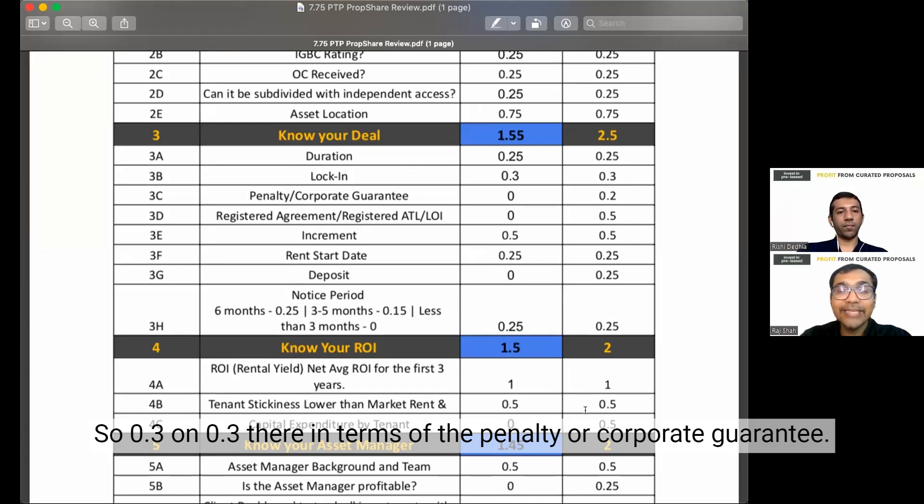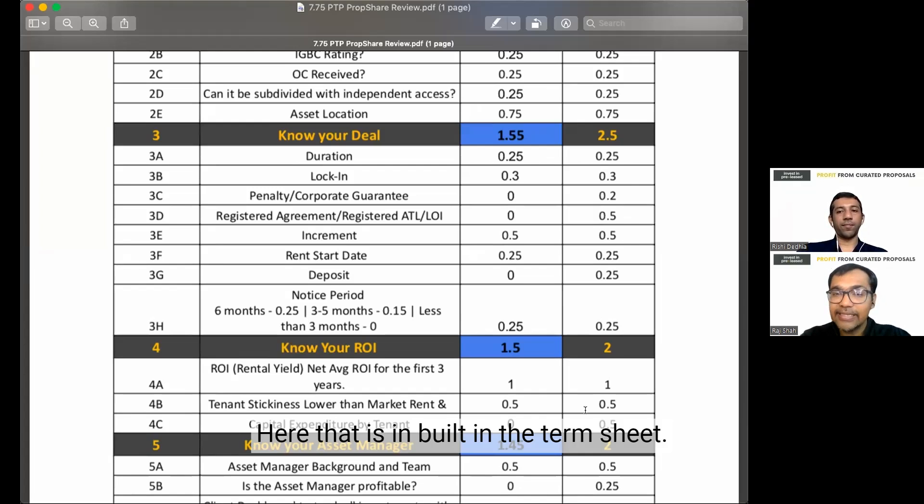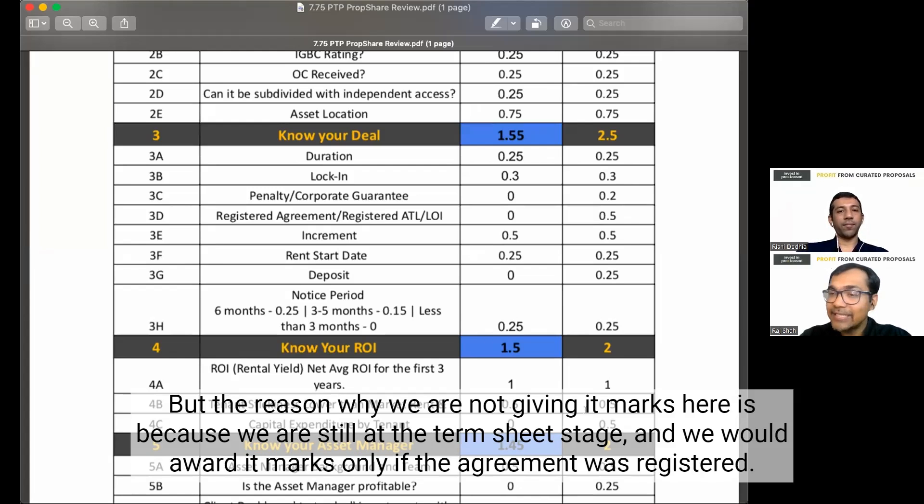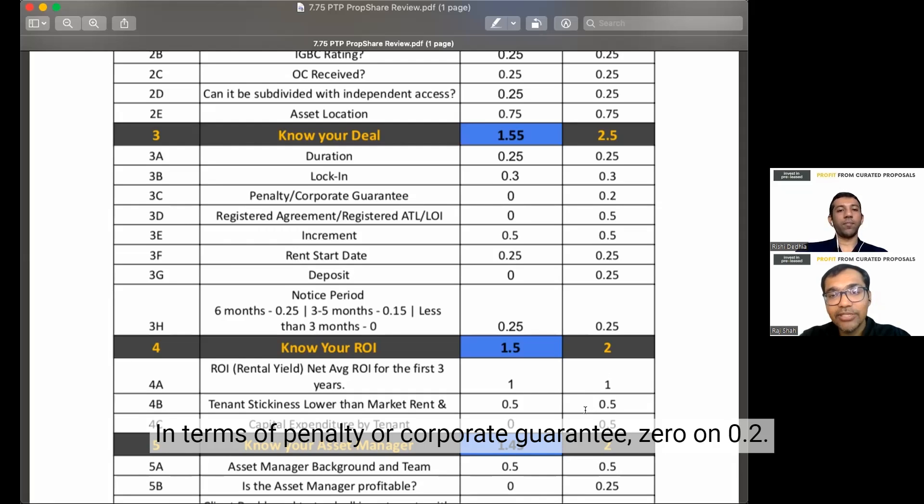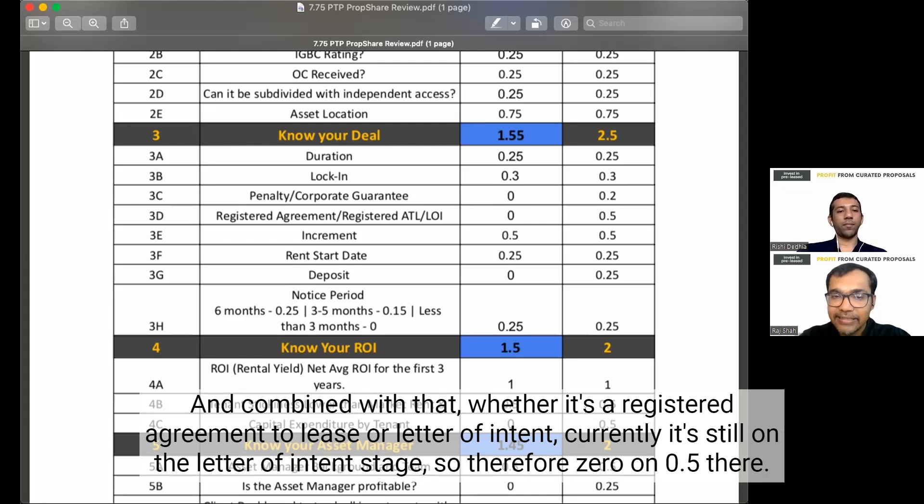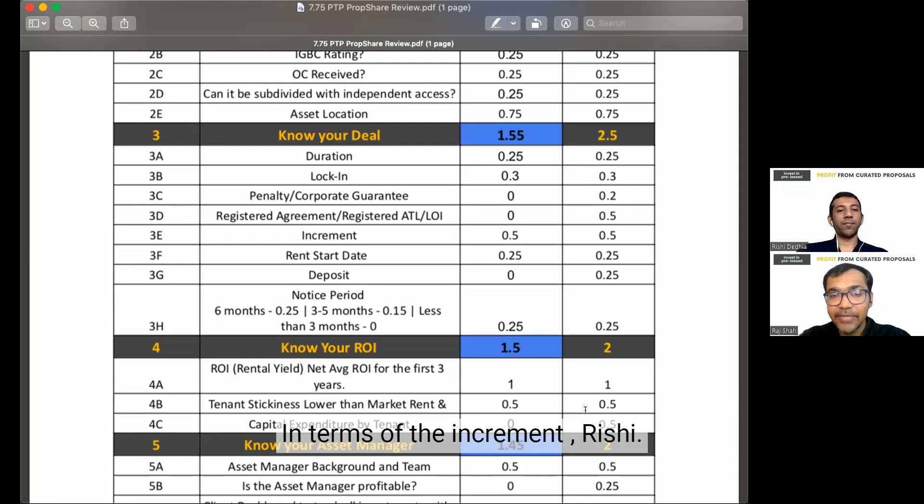In terms of the penalty or corporate guarantee, so yes, there is a penalty here that is built in the term sheet. But the reason why we are not giving it marks here is because we are still at the term sheet stage. And we would award it marks only if the agreement was registered. Now the reason why we have done this is because we have seen that from the time the LOI, the term sheet, is signed to the time that the lease is registered, sometimes there could be some negotiations in terms of penalty or corporate guarantee. 0 on 0.25. And combined with that, whether it's a registered agreement to lease or letter of intent, currently it's still on the letter of intent stage. So therefore 0 on 0.5 there.